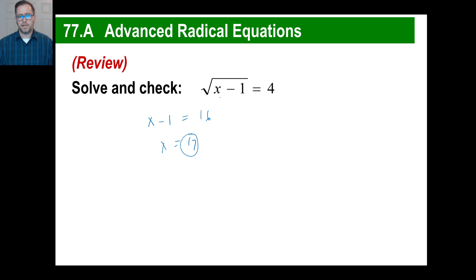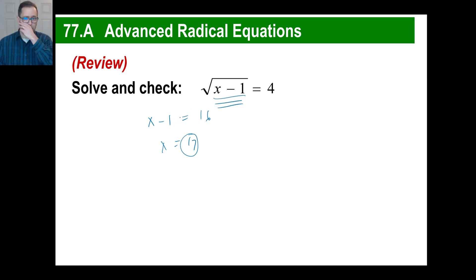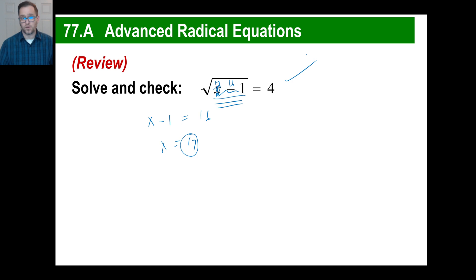Because we sometimes take negative numbers and square them — they turn into positive numbers — we have to check every answer. So stick in your number: 17 minus 1 is 16, the square root of 16 is 4. Yep, that works.